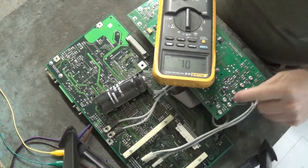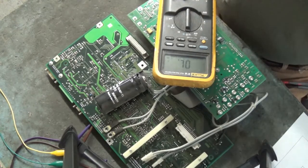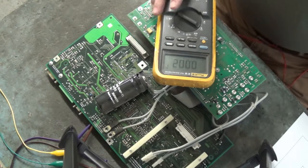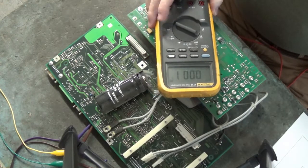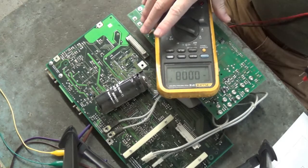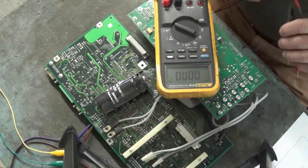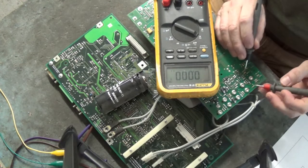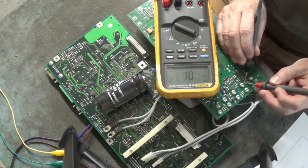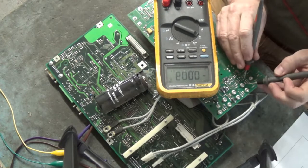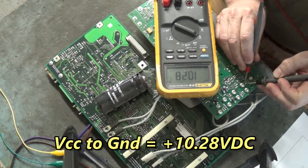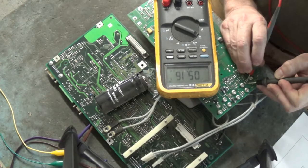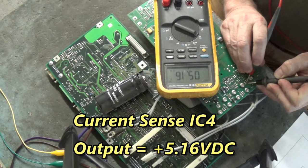Now we're going to take a look at the four current sense output voltages to see if anybody's different. Can you all see that okay? Here's the first one, that's VCC to ground, 10.28 volts DC. Here's the output, 5.16 volts DC.